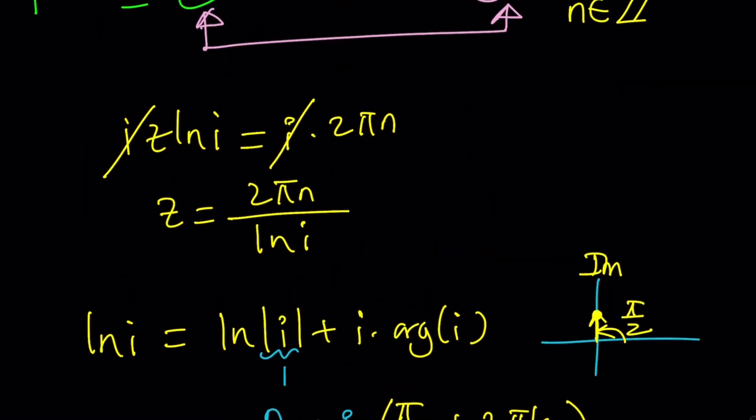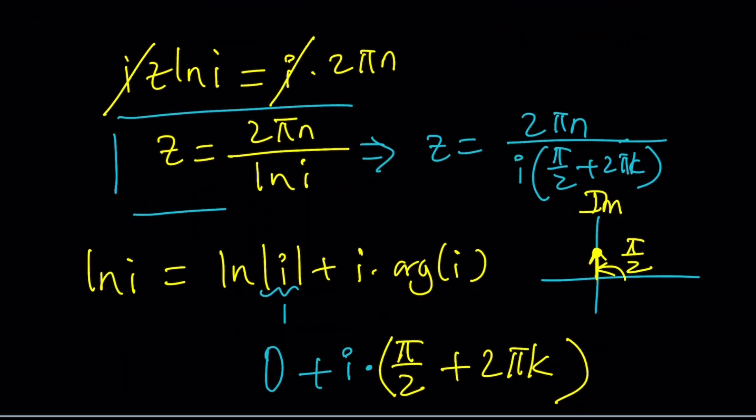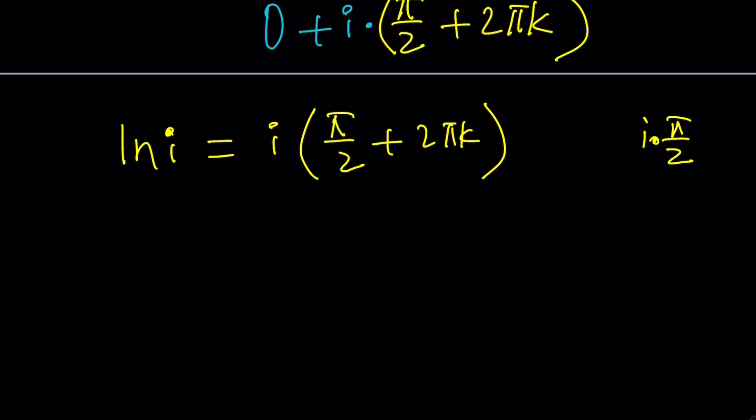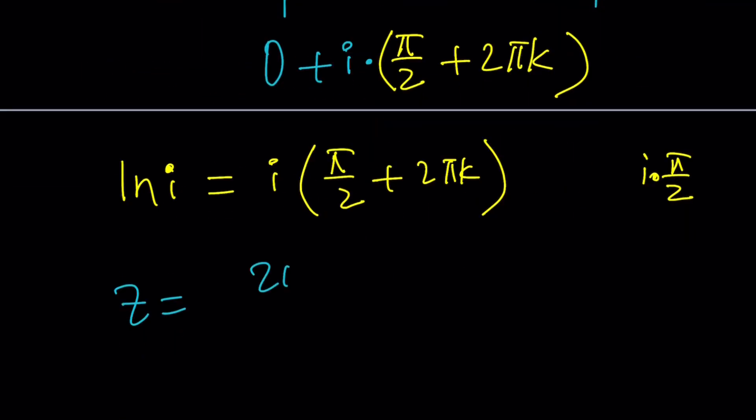Let's go back and substitute right here. This gives us z equals 2 pi n divided by ln i which is given by i times pi over 2 plus 2 pi k. So that looks like the solution. Let's write it as a cleaner version. 2 pi n divided by i times pi over 2 plus 2 pi k.